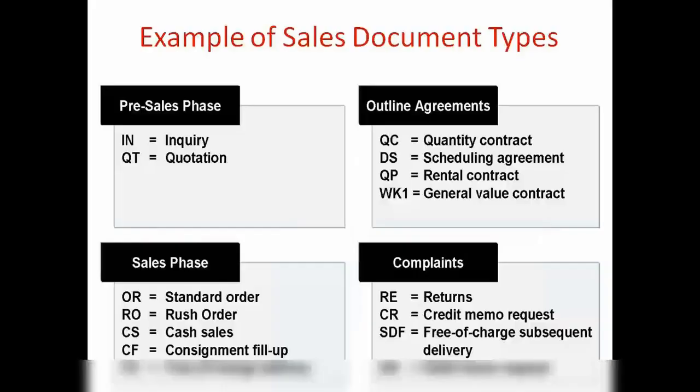There are different basic functions like sales document types, item categories, and schedule lines. This is what we are going to learn here — controlling sales documents. When I say sales document types, it includes different types of orders: sales order, inquiry, quotation, rush order, cash sale, consignment fill-up, consignment delivery, free of charge delivery.